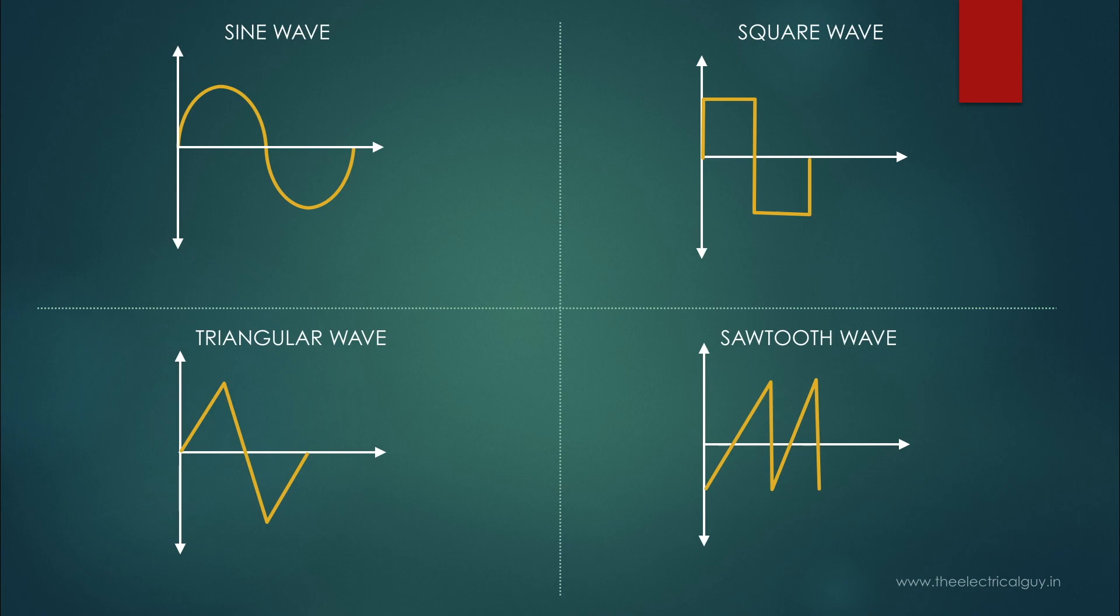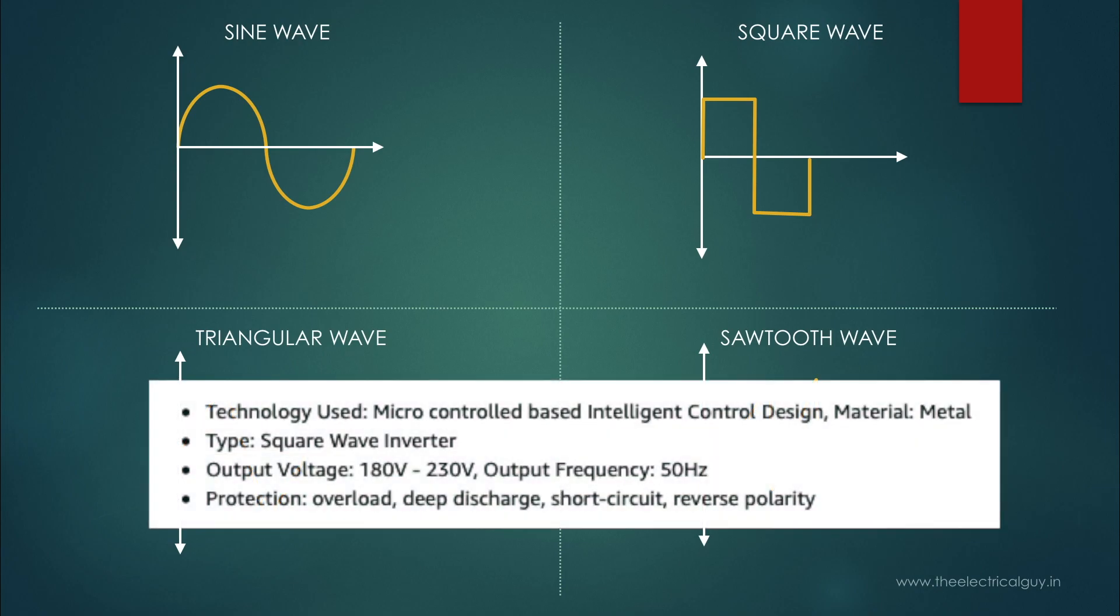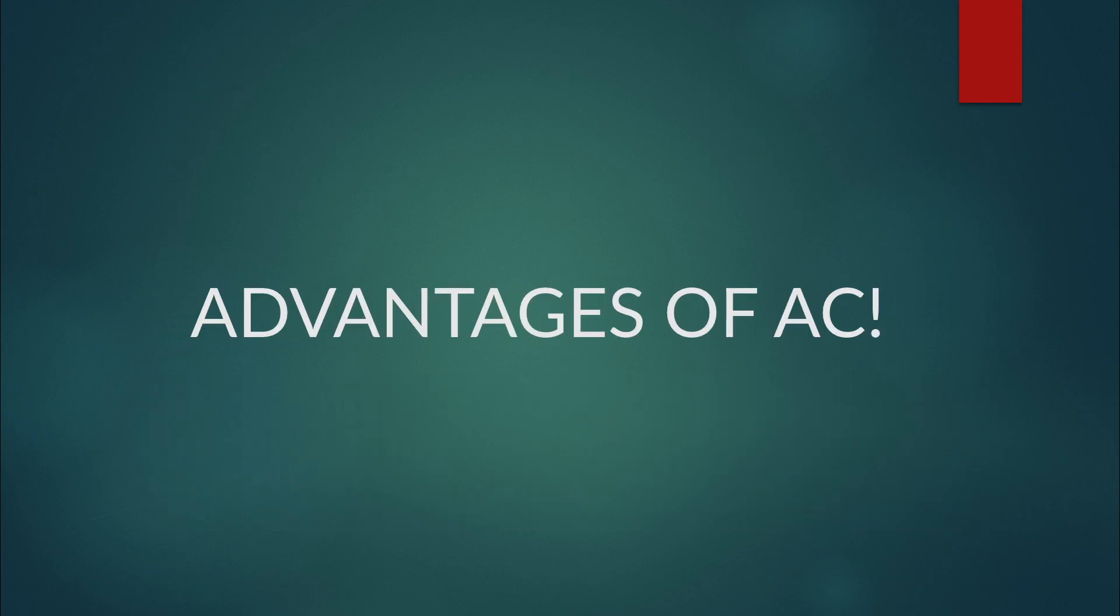Some of the inverters can give you a square wave output. You can check your own inverter datasheet. You will get to know if the inverter gives you the pure sine wave output or square wave output.